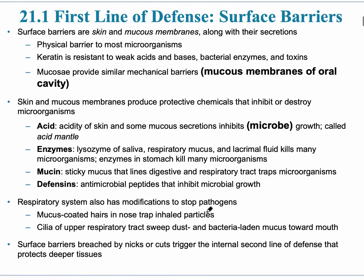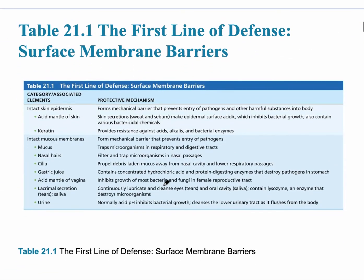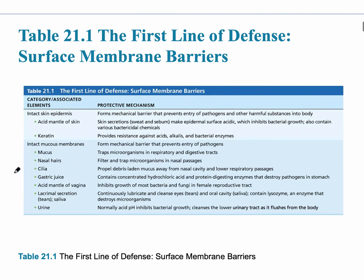Looking at the first line of defense in more detail: there's keratin in the skin, a tough protein for protection, and the mucosa, which provides a mechanical barrier. For example, if you are swallowing food and there happens to be a bone in it, the immune system — specifically the first line of defense — protects you. The skin and mucous membranes include examples like the acid mantle, enzymes, mucin, and defensins, and there's a table that shows the various examples of the first line of defense.